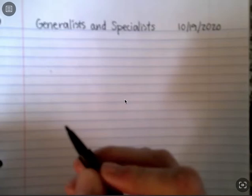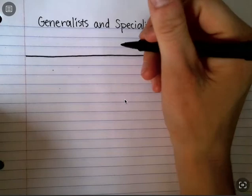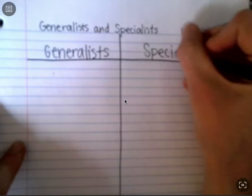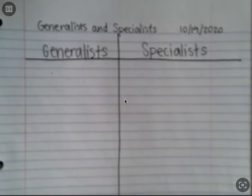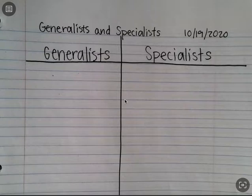As we read the article together, we are going to use this entry to list information and examples of both generalists and specialists. In order to organize our information, we are going to make a t-chart. Draw a line across the top of your paper and then a big line vertically all the way down to the bottom. We are going to put generalists on the left and specialists on the right. As we read our article, we will take a minute to list information and examples in our notebook.